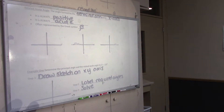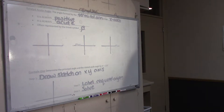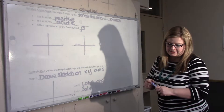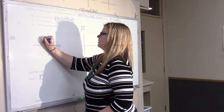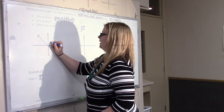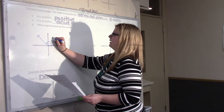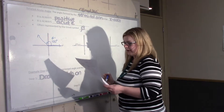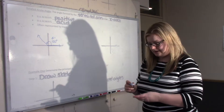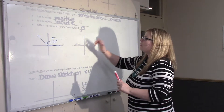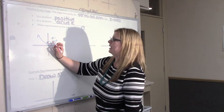A related acute angle is formed by the terminal arm and the x-axis. I'm going to draw the principal angle of 120 degrees again. That's theta. Beta is what we're going to be calling the related acute angle, so beta is always between the terminal arm and the x-axis.